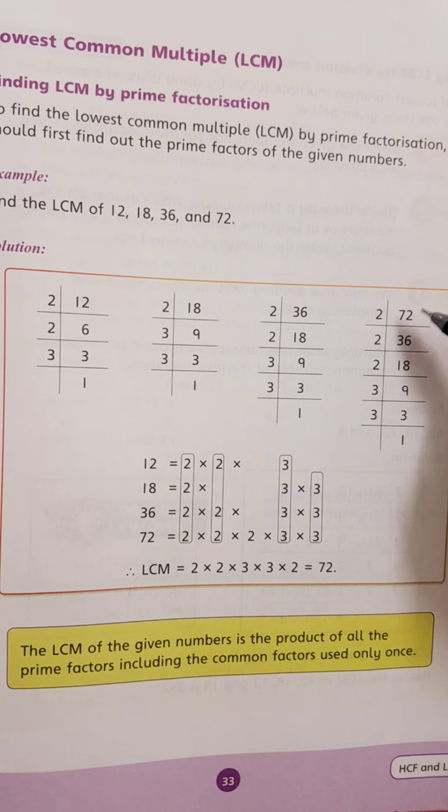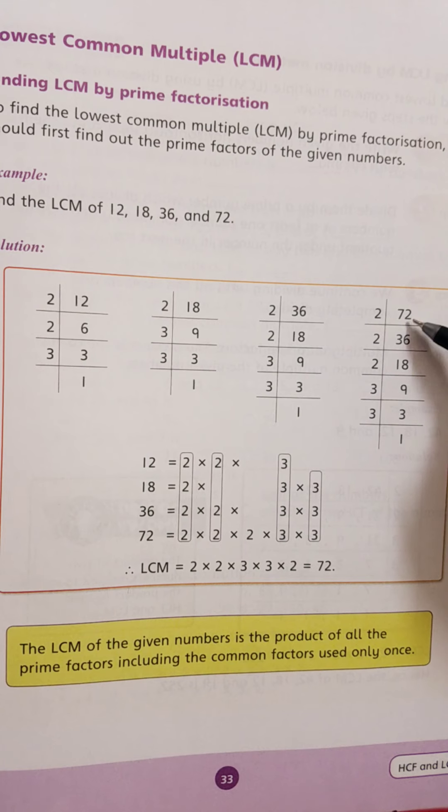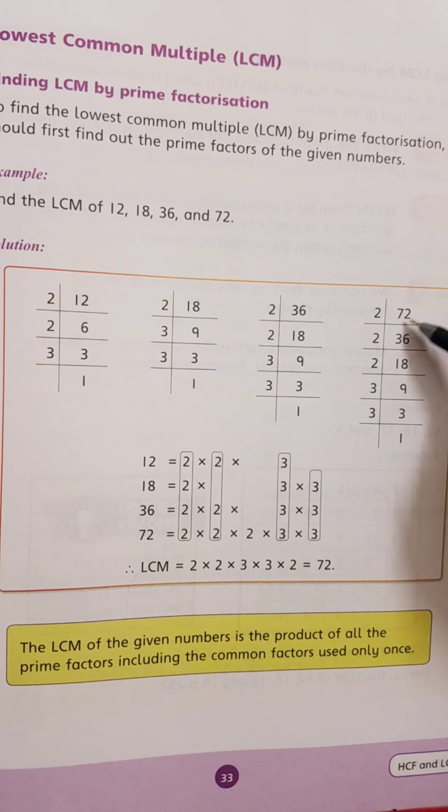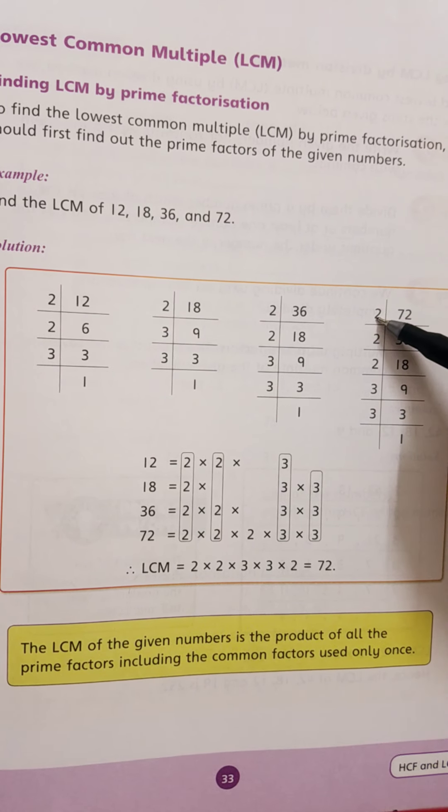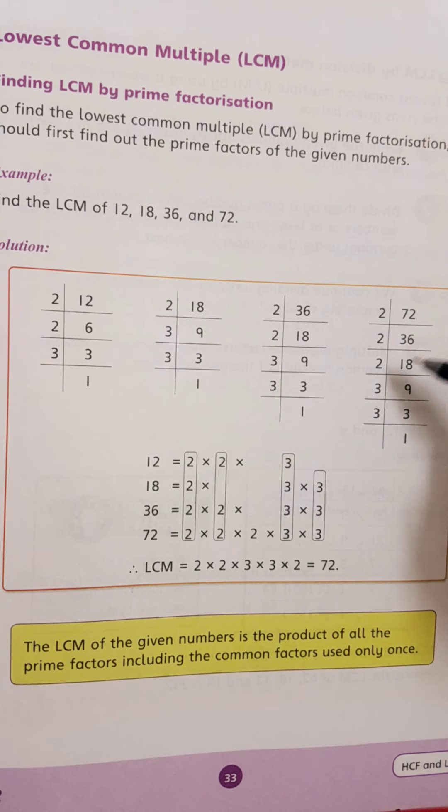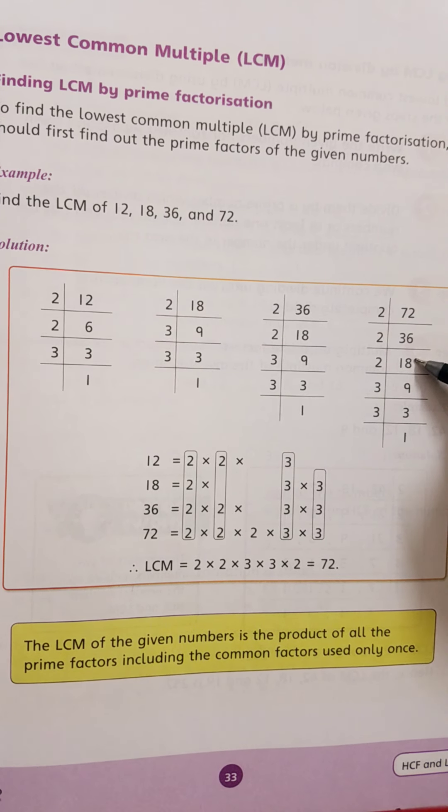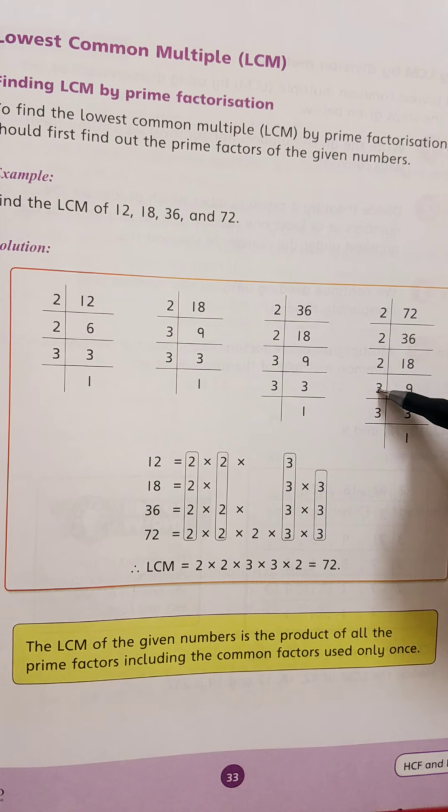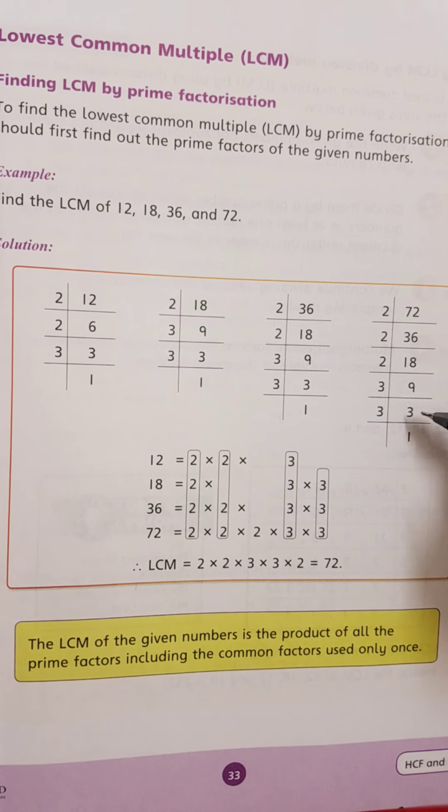Last number is 72. 72 is an even number, ones place has 2 so it's even. 2 thirty-sixes are 72, 2 eighteens are 36, 2 nines are 18, 3 threes are 9, and 3 ones are 3.